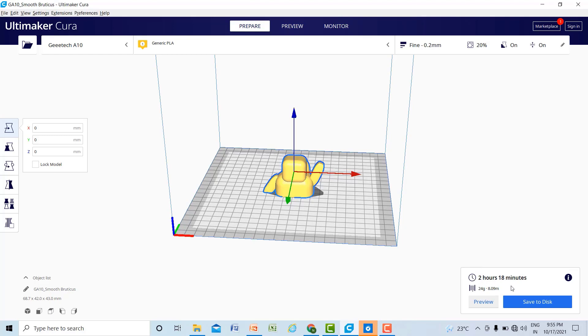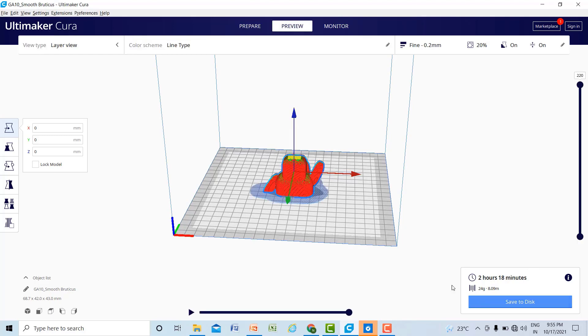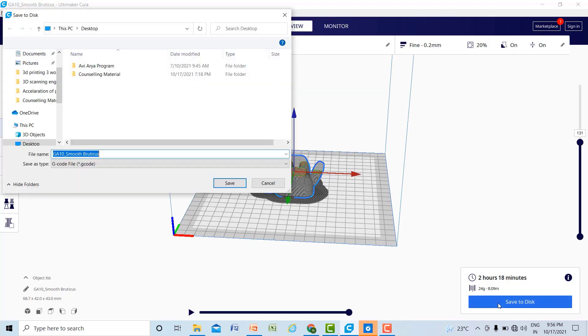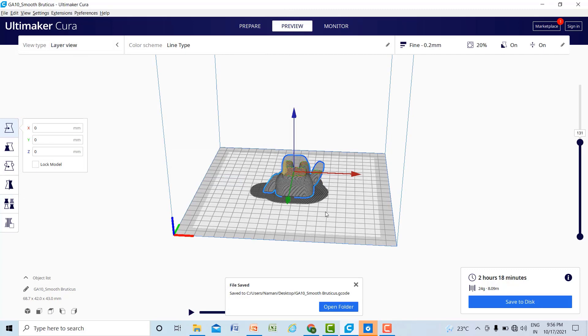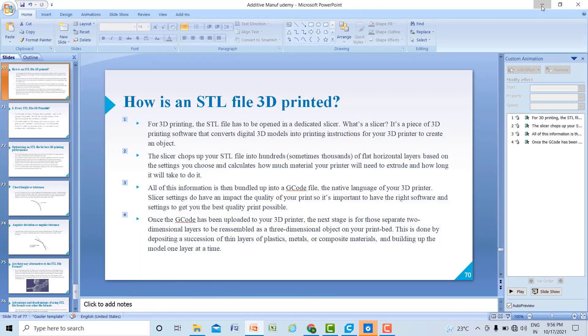After slicing, you can see that it will take 2 hours and 18 minutes for printing and it will take 24 grams of material. You can see your preview also, how this product, how this object will be made. Here you can see it will be created layer by layer. This will be the path of your nozzle. Here I have created the G-code, so I will save this to disk. I have saved this onto the desktop.